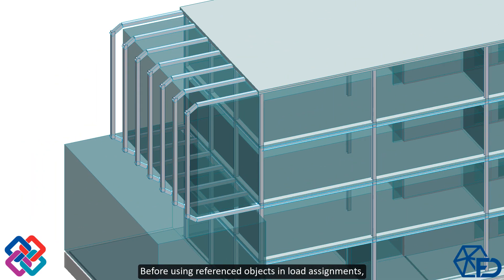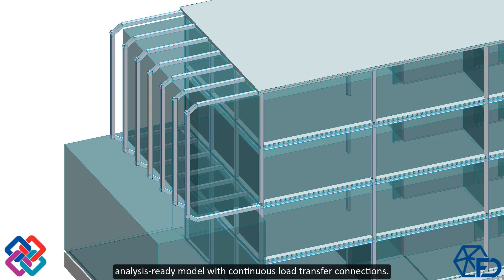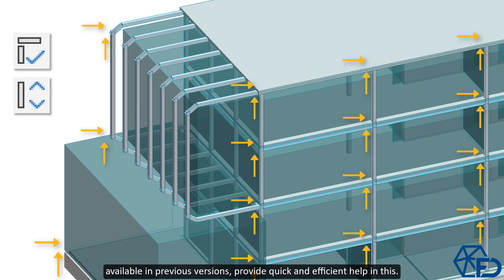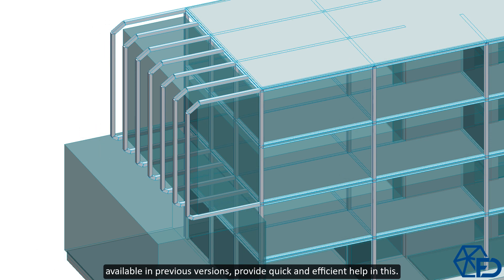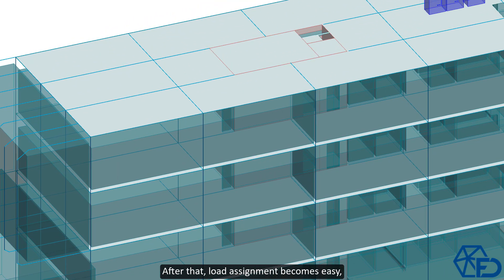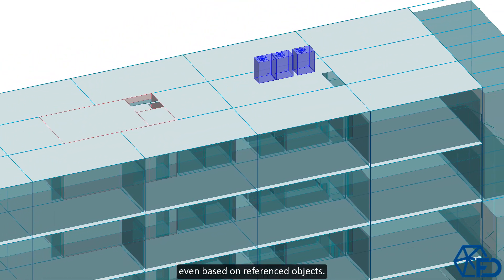Before using reference objects in load assignments, the imported structural objects must be adjusted into an analysis-ready model with continuous load transfer connections. Intelligent and automated alignment and model correction tools available in previous versions provide quick and efficient help in this. After that, load assignment becomes easy, even based on referenced objects.